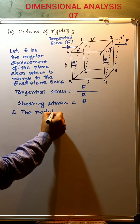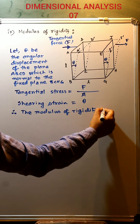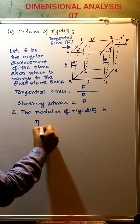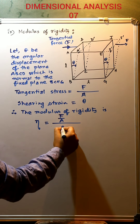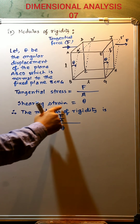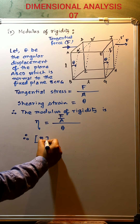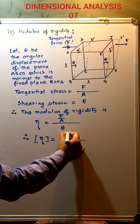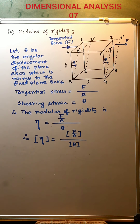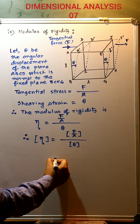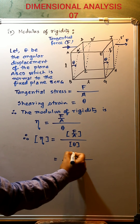The modulus of rigidity, denoted by eta, is the ratio of tangential stress (F/A) divided by shearing strain (theta). Therefore, the dimension of modulus of rigidity equals the dimension of tangential stress divided by the dimension of shearing strain. We know that the dimension of F/A is equivalent to pressure, which is M L⁻¹ T⁻².